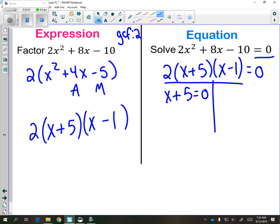So, x plus 5 equals zero. And x minus 1 equals zero. And now you have to solve these two mini equations.